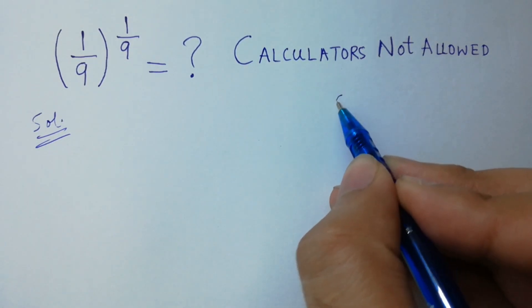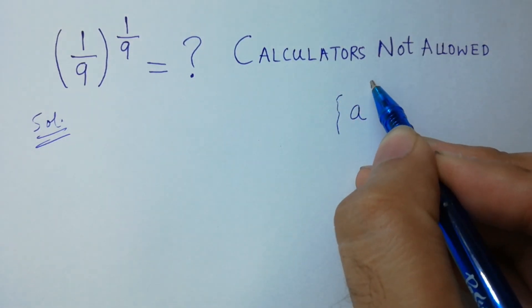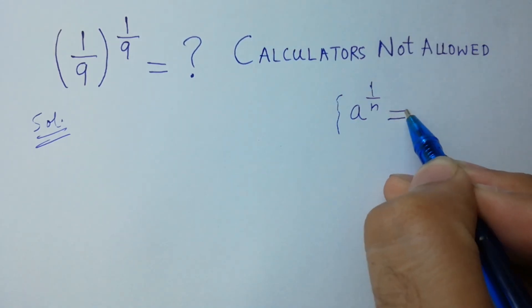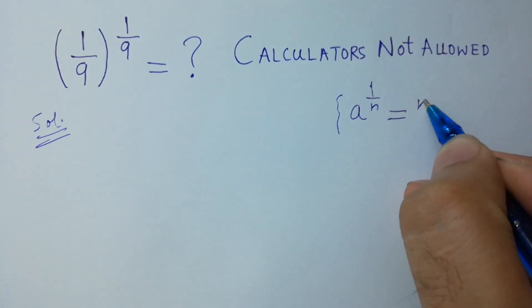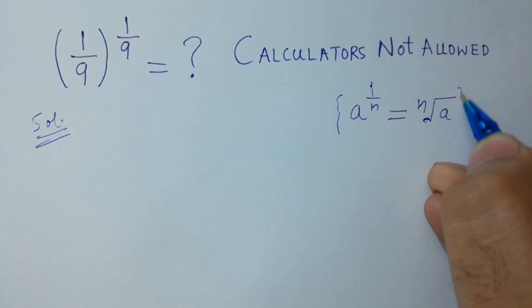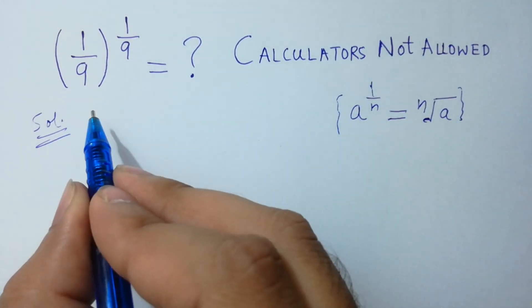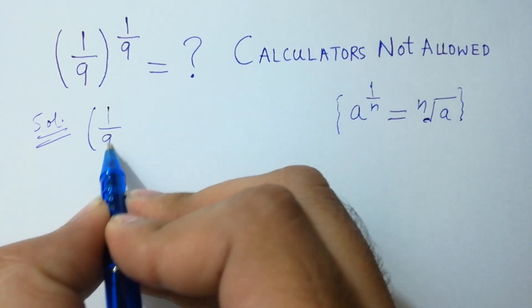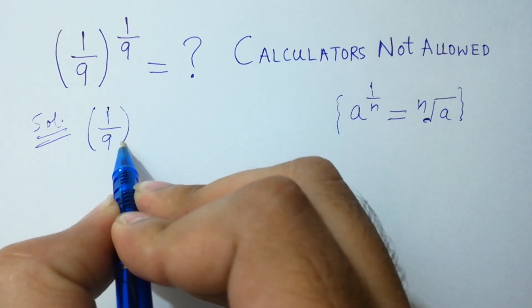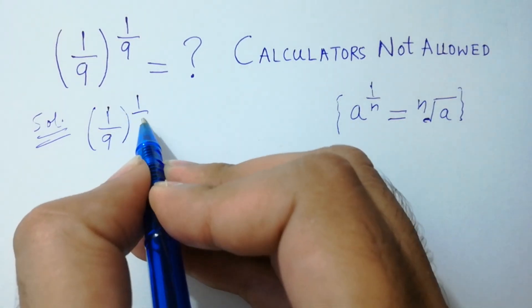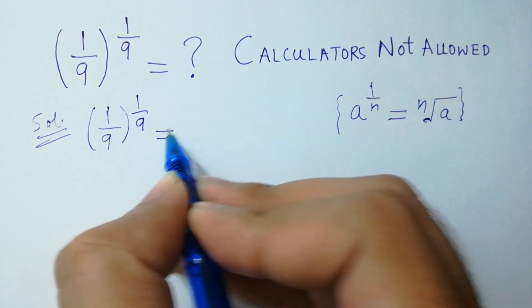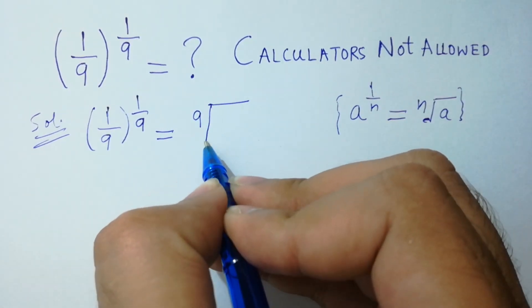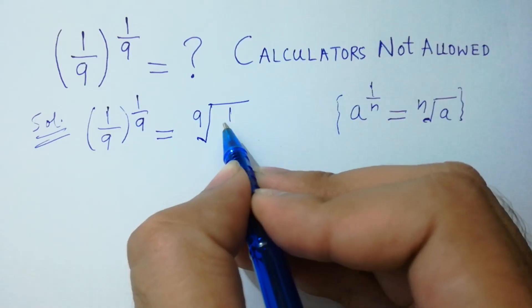Since a to the power 1 over n equals n-th root of a, so 1 over 9 to the power 1 over 9 will be equal to the 9th root of 1 over 9.